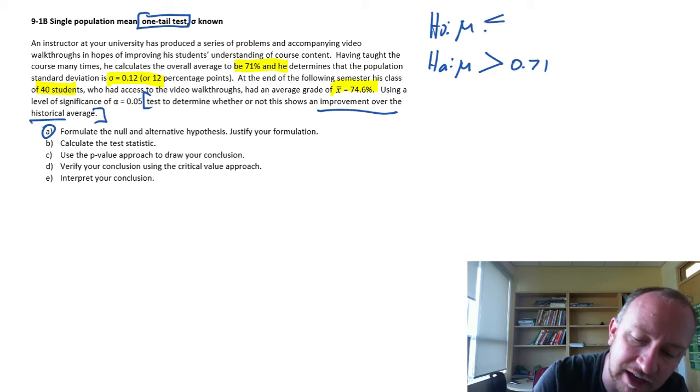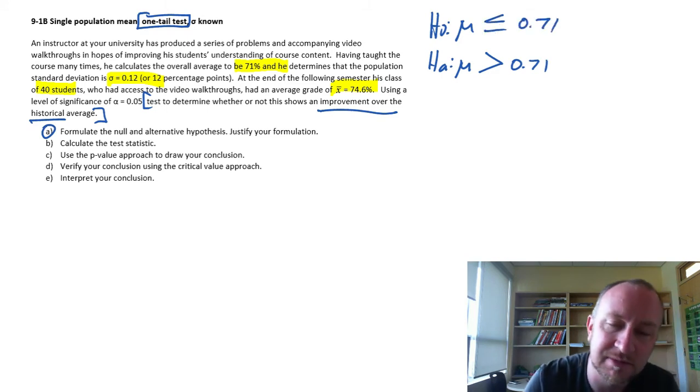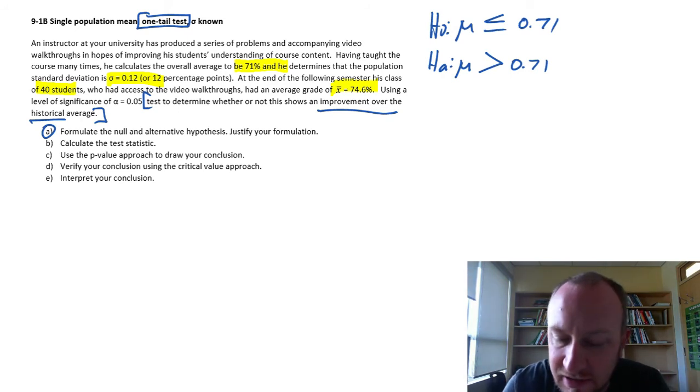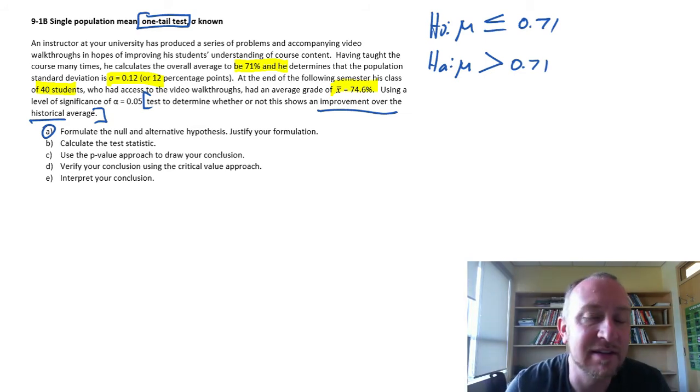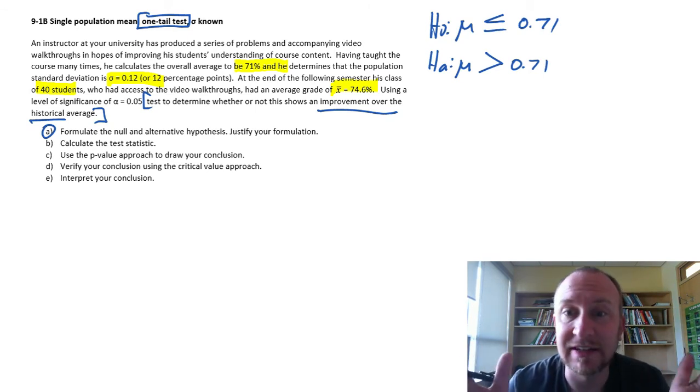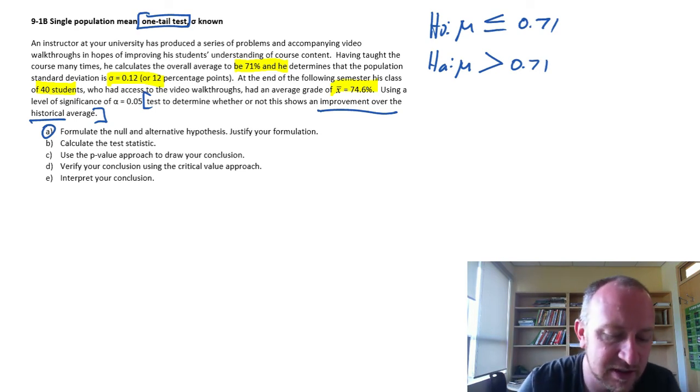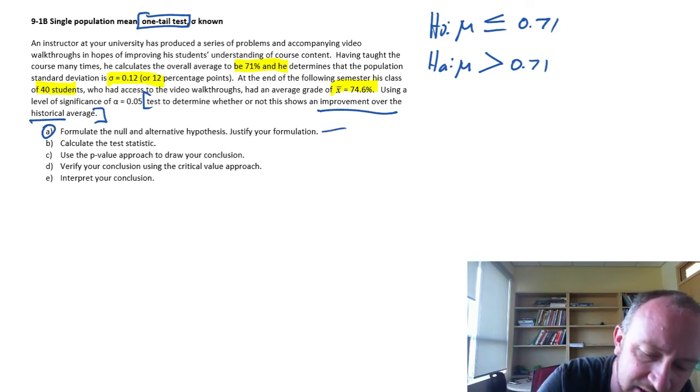The null hypothesis captures every other possibility. If the evidence supports the alternative hypothesis, then yes the average rate has improved. If the evidence supports the null hypothesis, then no, these video walkthroughs, there's no evidence they've had any positive impact on student outcomes.